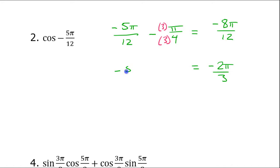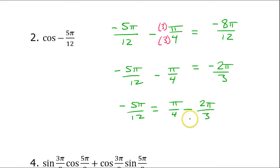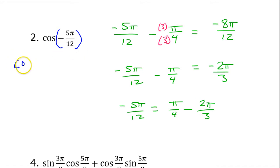So now I have: negative 5π over 12 minus π over 4 equals negative 2π over 3. Adding π over 4 to both sides, this gives me negative 5π over 12 equals negative 2π over 3 plus π over 4 — wait, it's not plus, it's minus. So negative 5π over 12 equals π over 4 minus 2π over 3. I will rewrite this as cosine(π/4 − 2π/3).